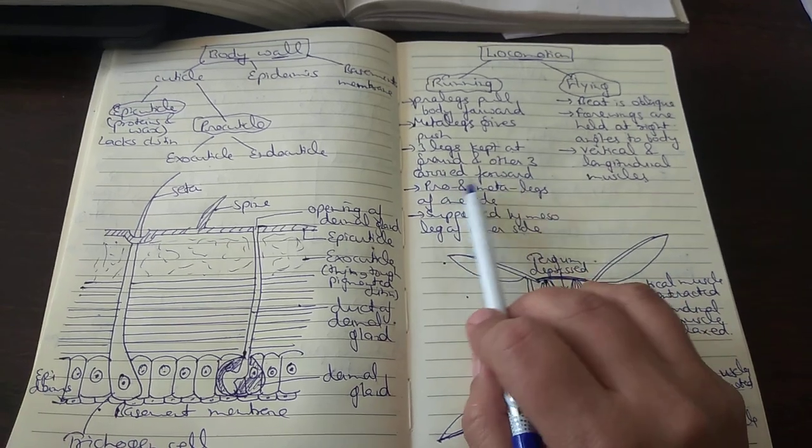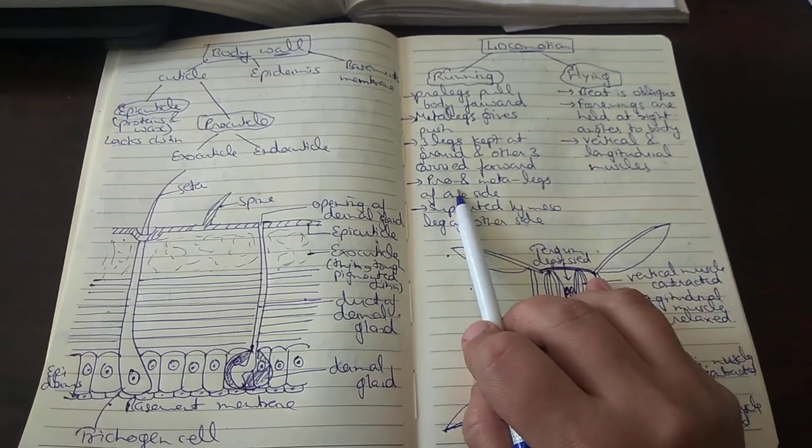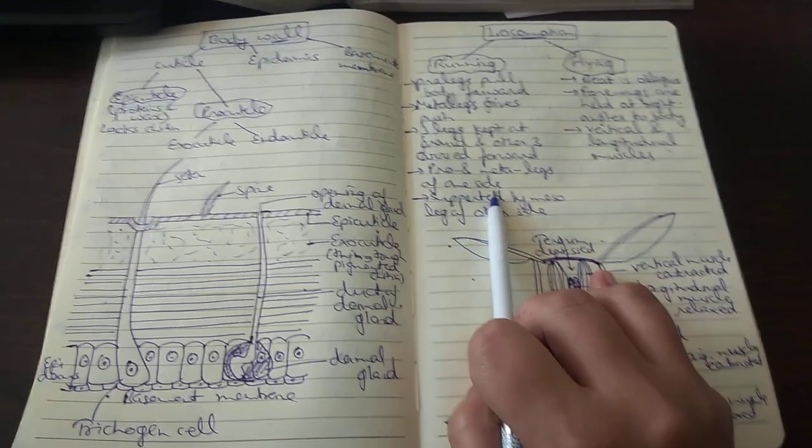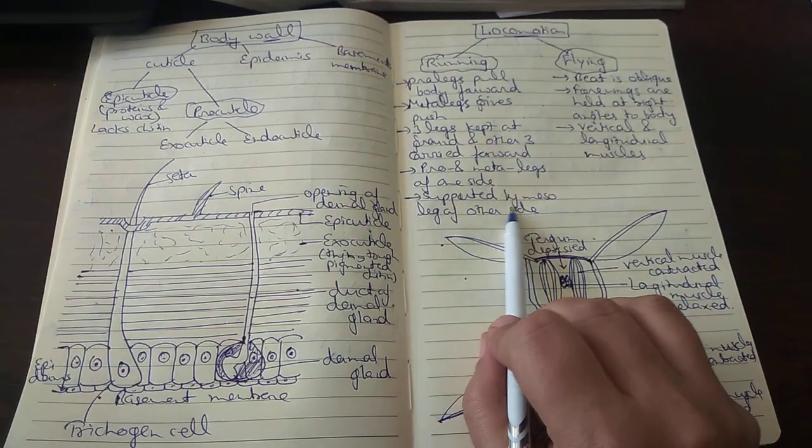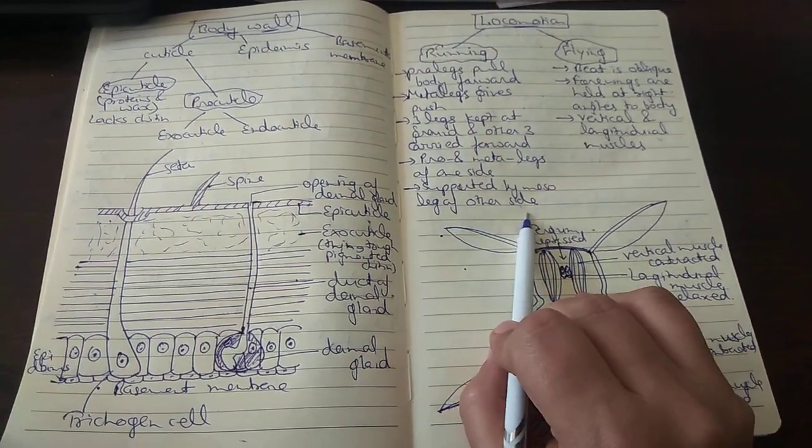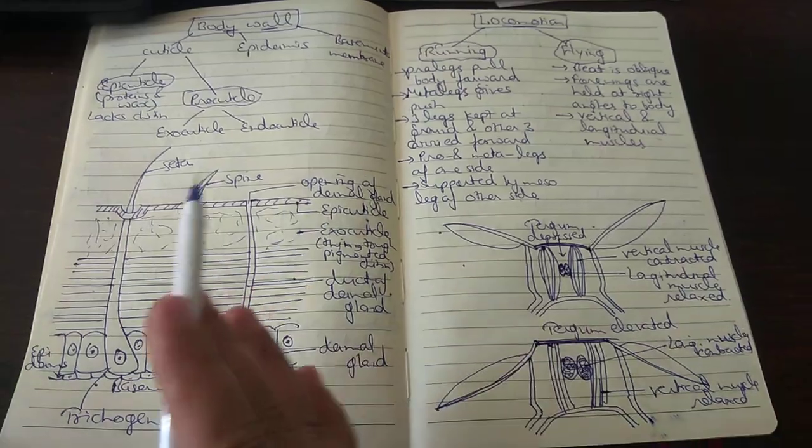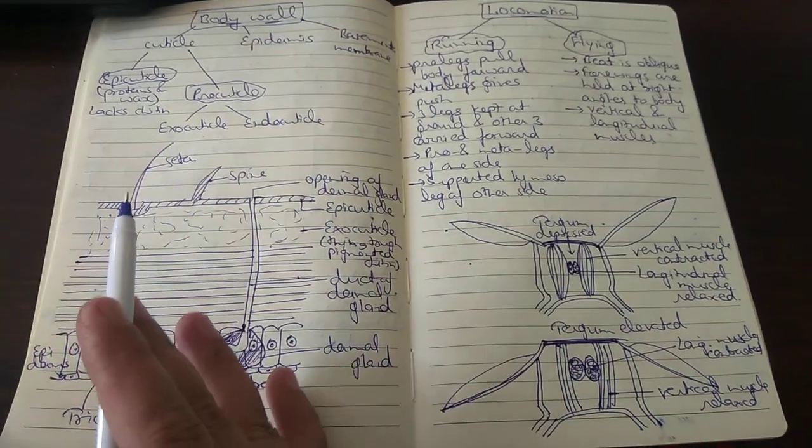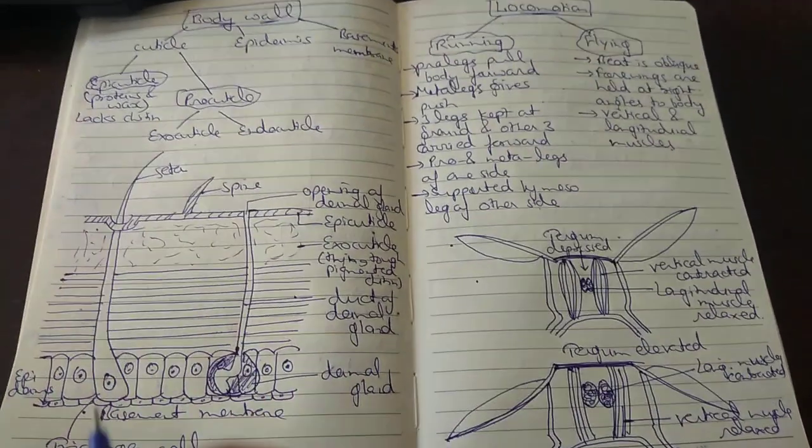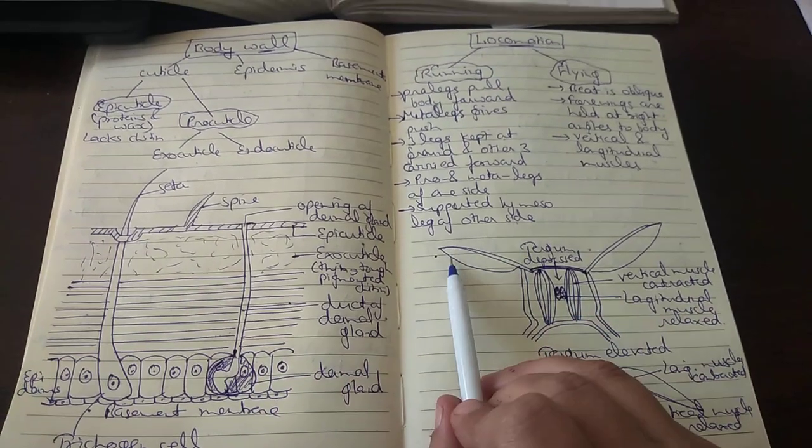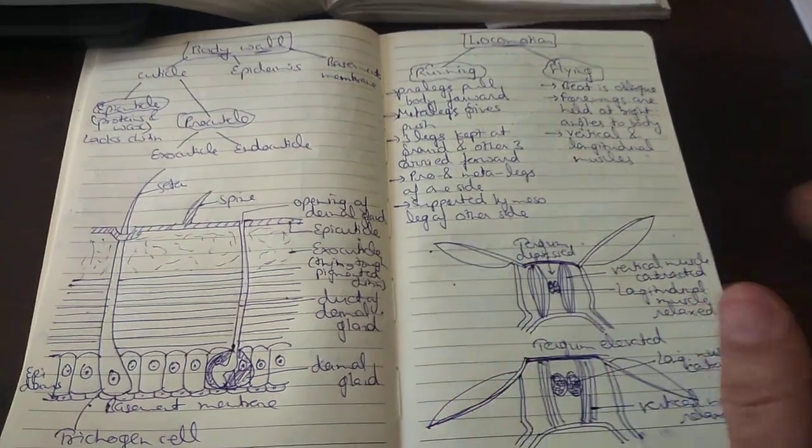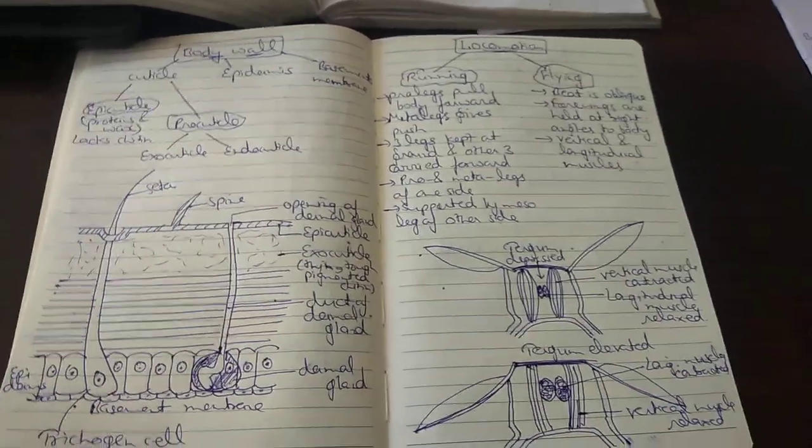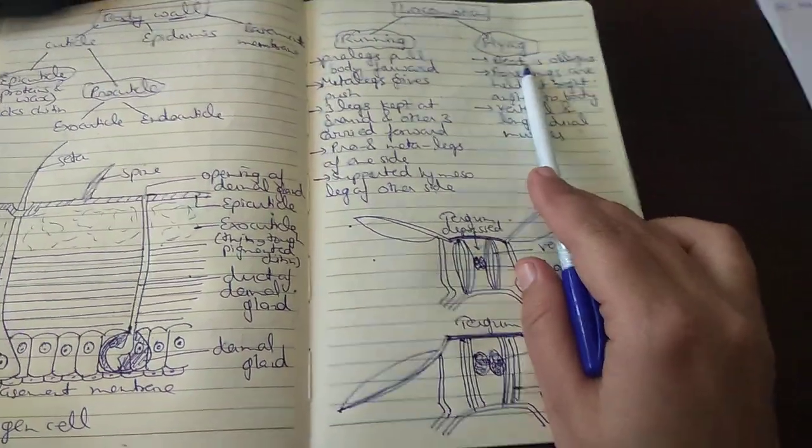While running, three legs are kept on the ground and the other three are carried forward. Pro and meta legs of one side are kept forward and are supported by the meso leg of the other side. The pro and meta legs of one side give the required push for moving forward, while the meso leg of the other side rests at that time, and the opposite happens with the other side.